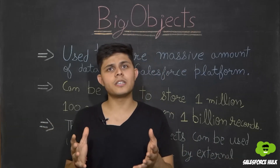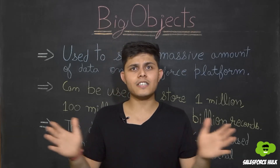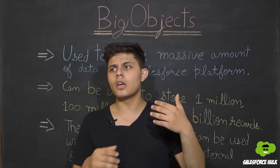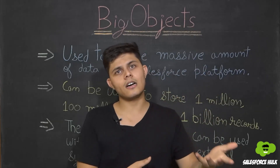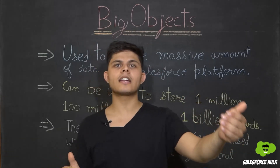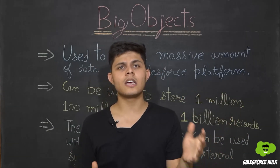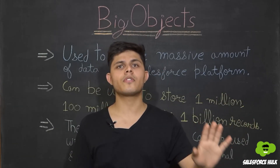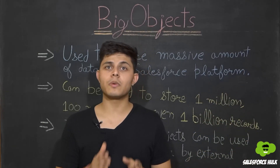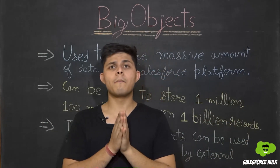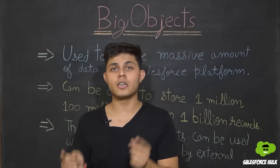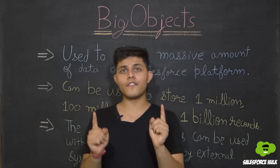Big objects are used to store massive amounts of data, whereas standard objects or custom objects are used to store data on the Salesforce platform with limits. There is a limit on standard and custom objects — you can only store a certain number of records — but with big objects you can store a massive amount of data on the Salesforce platform.